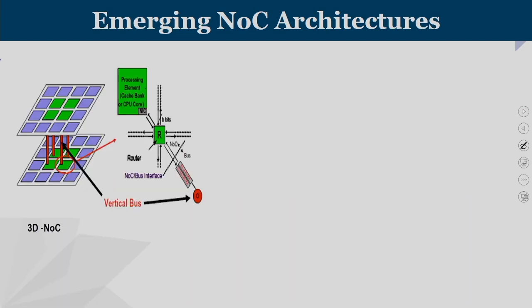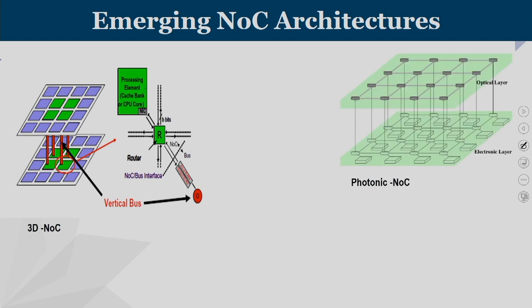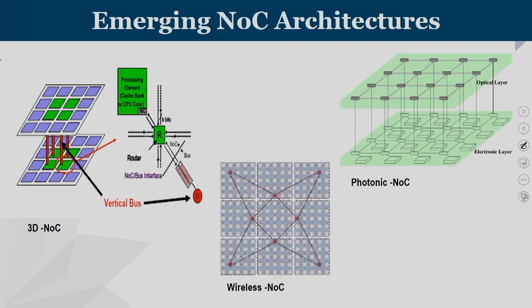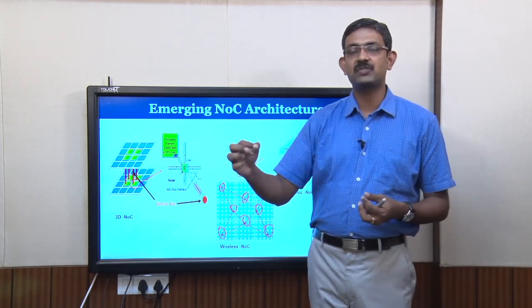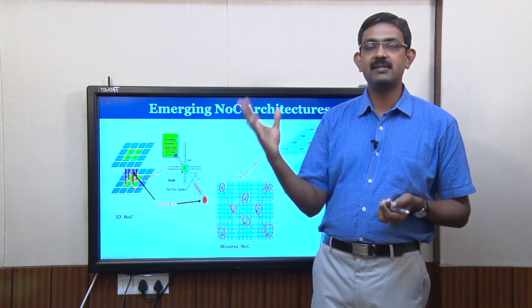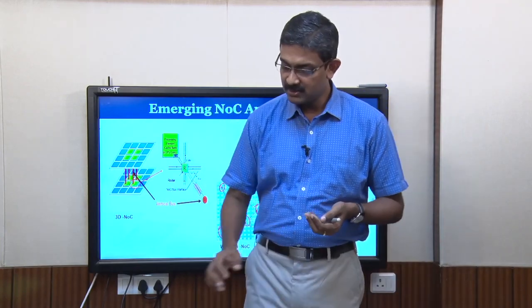Among the important techniques, we have 3D NOC with vertical interconnects, photonic NOC, and wireless NOC — which we will spend more time on today. Looking at the wireless NOC structure, each region is marked with blue coloring, and within each region certain nodes are identified which have wireless transmission and reception capacity. Long-distance communication can be realized over these wireless links, on top of normal wired communication.